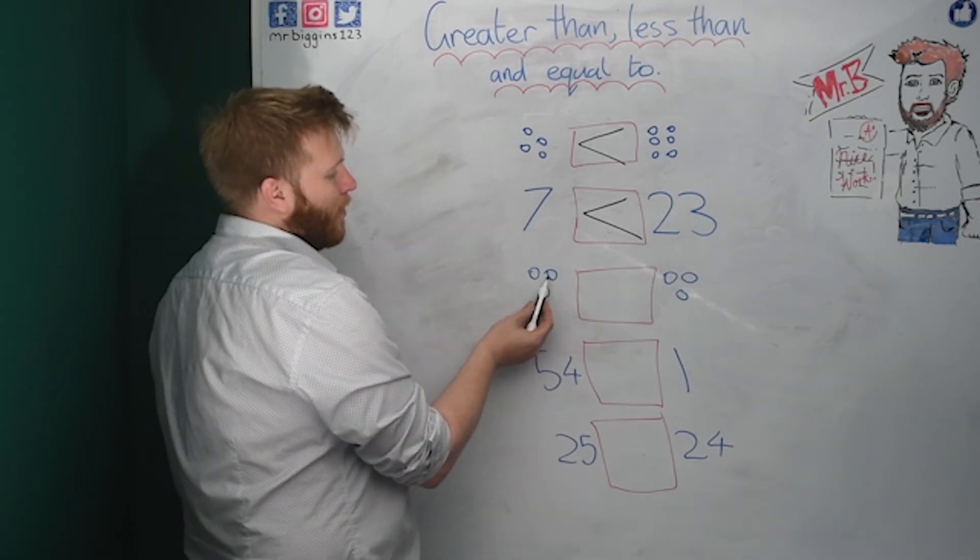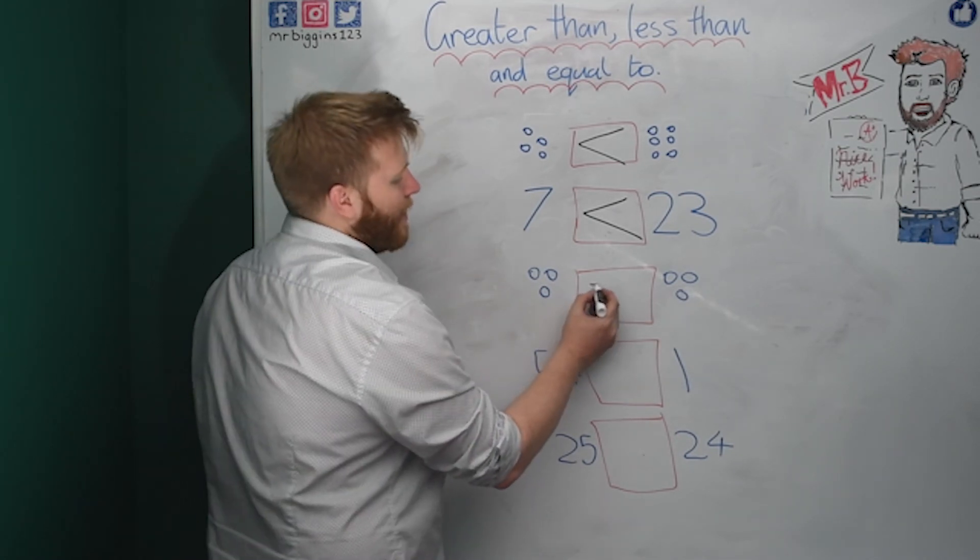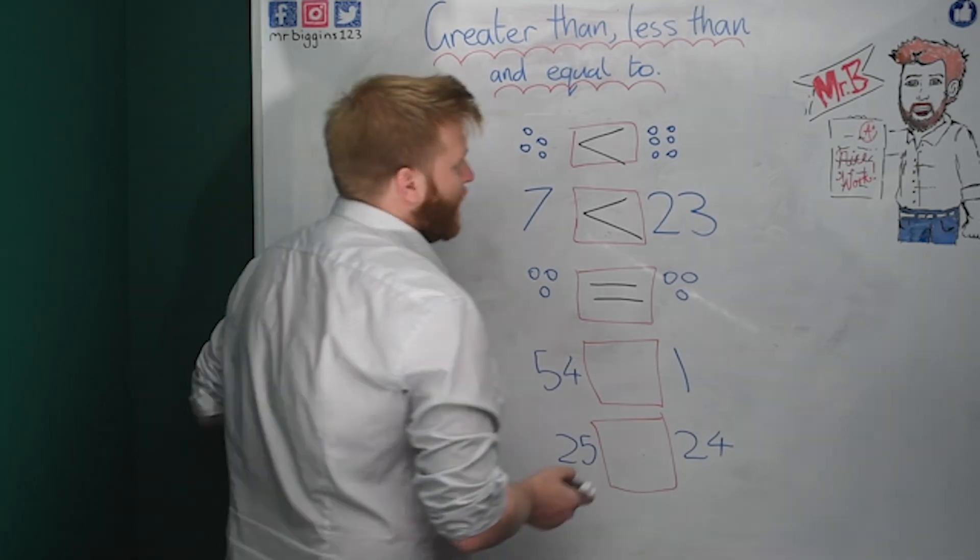Now on this one, we've got one, two, three. One, two, three. The same. Can you remember what the equal sign looks like? Yeah. Two lines, use that one a lot.